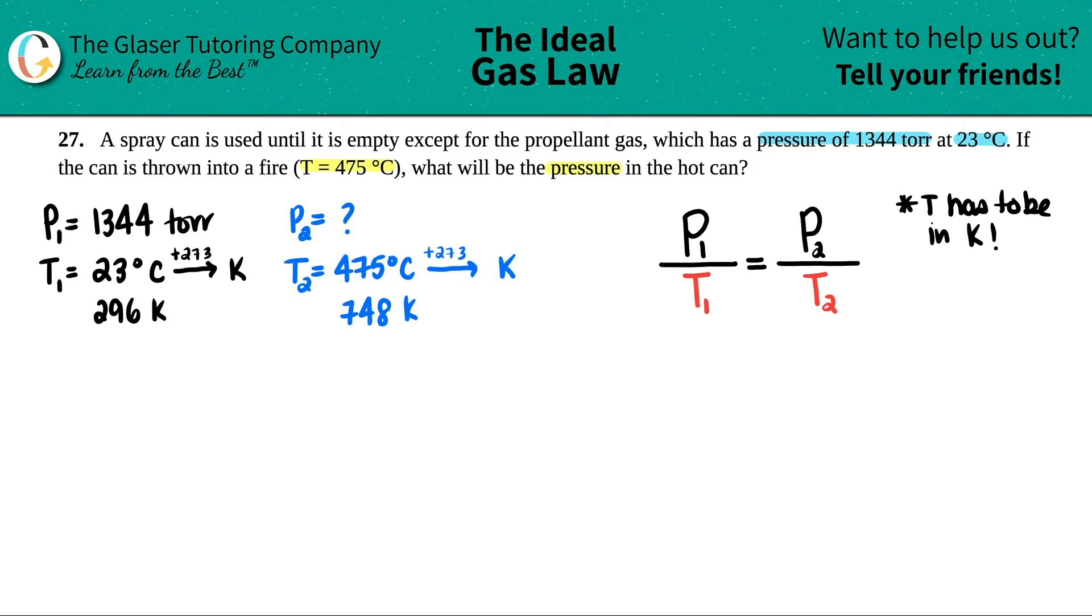So let's see. I have 1,344 divided by 298. When I start plugging into my equation, I don't put in the units anymore because I know that I'm working with the correct units. Now T2 is going to be the 748. And now we just need to find out what P2 is. If you want to label it as X, that's fine with me. If you want to say it's P2, go right ahead.